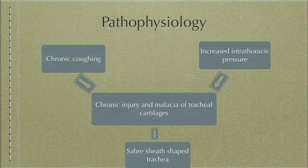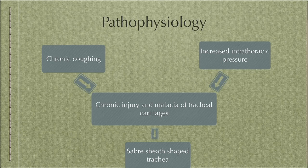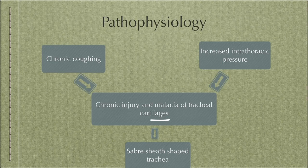Now coming to pathophysiology. There are two causative factors: chronic coughing and increased intrathoracic pressure. In COPD, both of these are key factors — COPD patients suffer from chronic cough and have increased intrathoracic pressure. This leads to chronic injury and malacia of the tracheal cartilages, which results in the saber-sheath shape of the trachea.